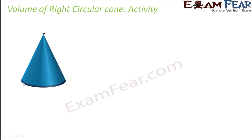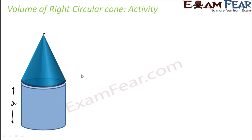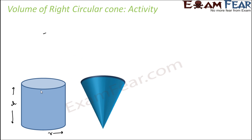We will take an activity using a cone and a cylinder of the same base and same height. If the height is h and the radius is r, the cone and the cylinder are exactly superimposed — they have the same height and same radius. Both are hollow — a hollow cylinder and a hollow cone with the same radius and same height.